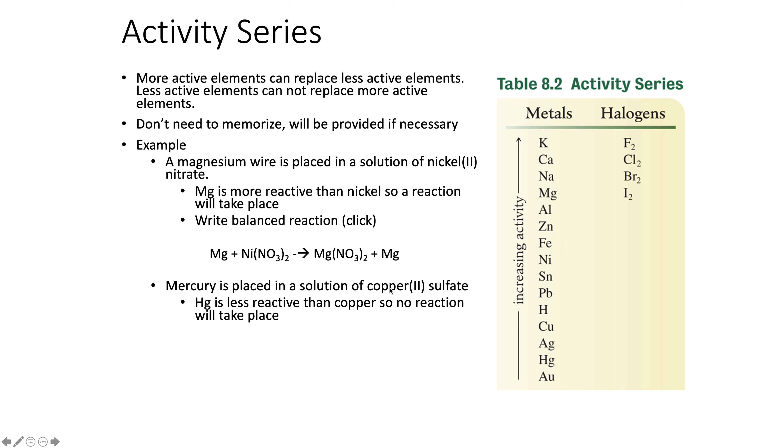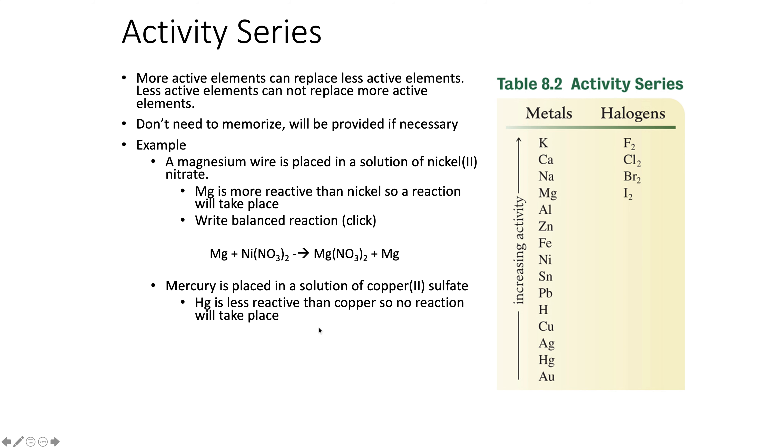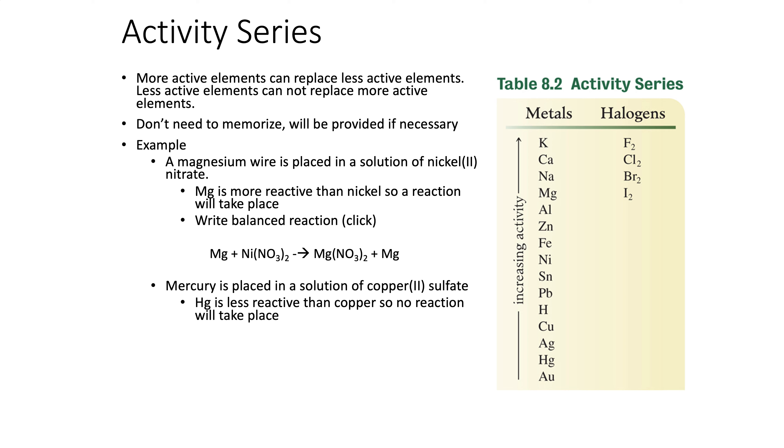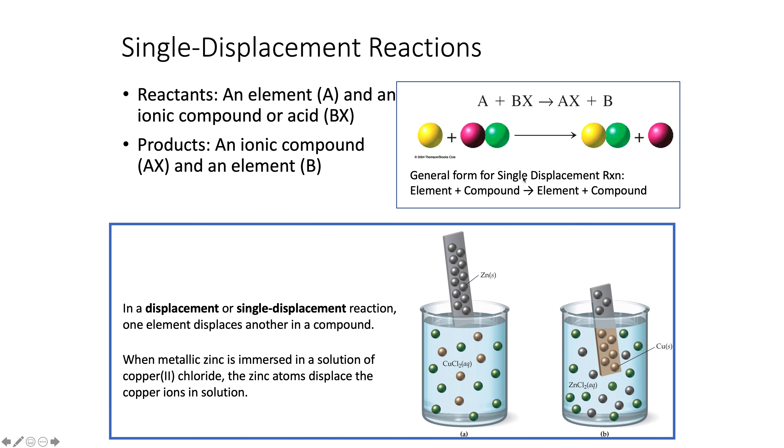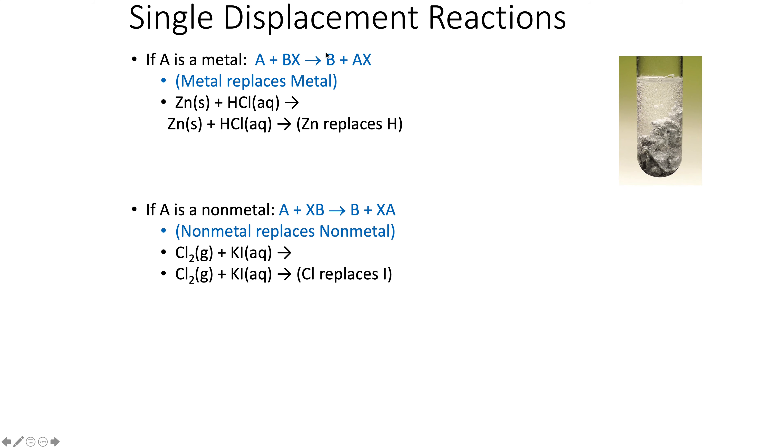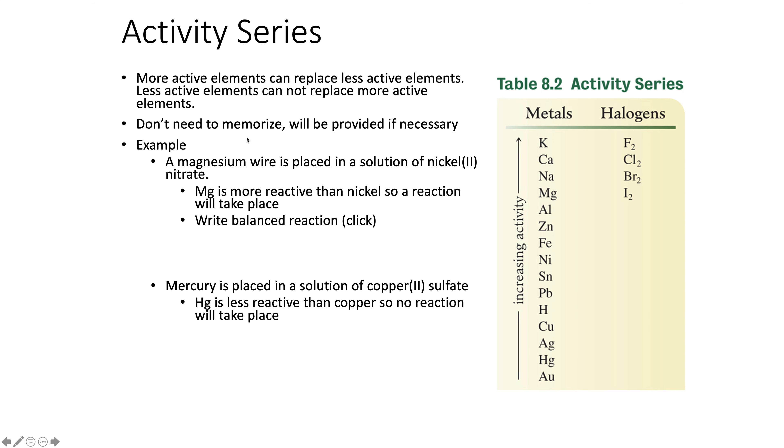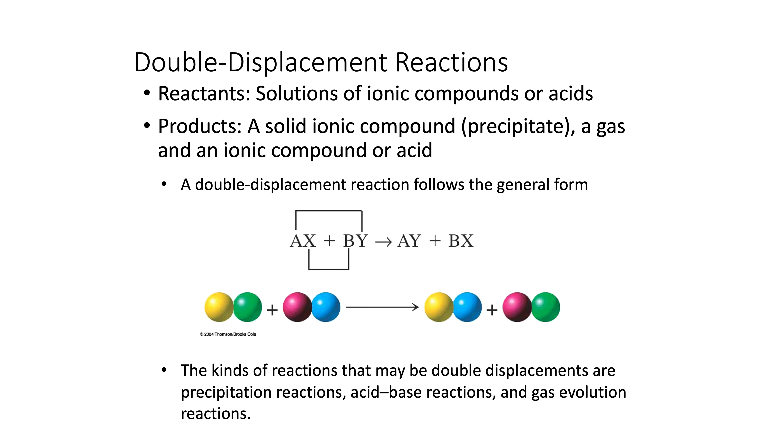Next one. Mercury is in a solution of copper sulfate. Mercury is Hg, it's way down here. Copper is here. That means mercury cannot replace the copper because mercury is less reactive. So this would be no reaction. Make sure you understand these. The pattern is seeing an element with a compound, and then you'd use the activity series.